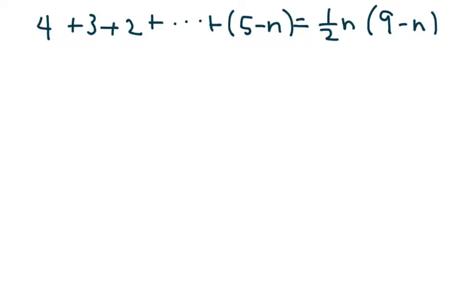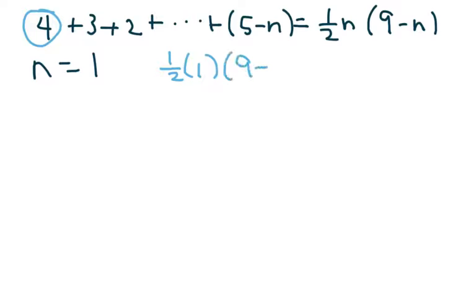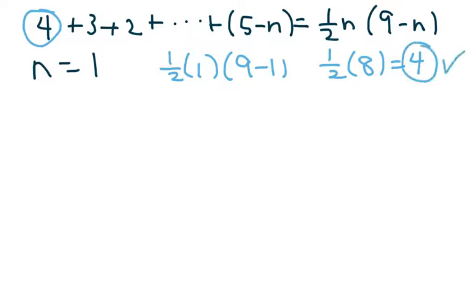We check condition one for n equals one, and we should get four since our first term is four. Plugging in: one-half times one times (9 minus 1) equals one-half times eight equals four. They match, so condition one holds.